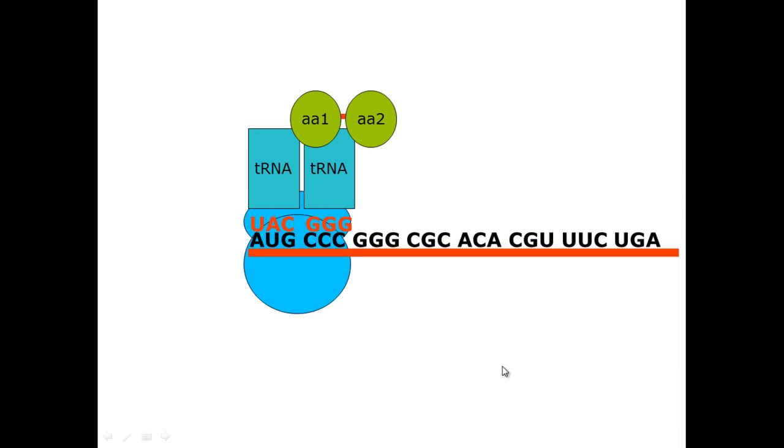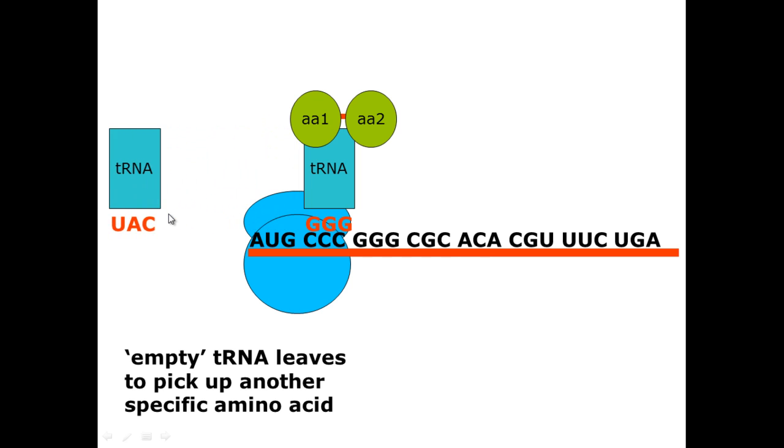The next thing that would happen is that this transfer RNA here is now free to move away. It has done its job. It has brought the correct amino acid in and is now free to move away, leaving behind the amino acid. It can then go off to pick up this specific type of amino acid, AA1.